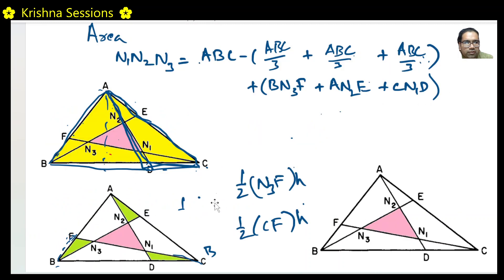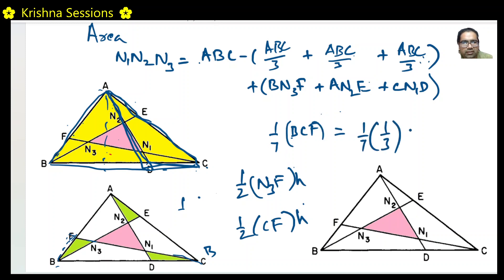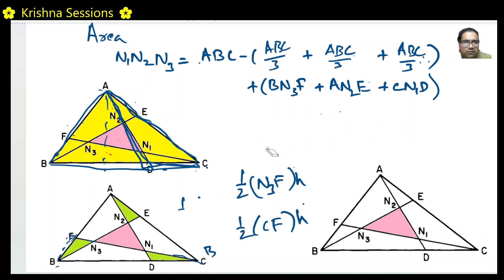Therefore area of BN3F = (1/7) × Area(BCF) = (1/7) × (1/3) × Area(ABC) = (1/21) × Area(ABC). So BN3F = ABC/21.